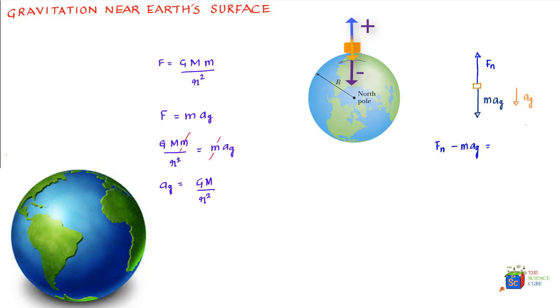If we write Newton's second law for this setup, what you get is Fn minus mag should equal to m into omega square r, and we'll put a negative sign outside because this is acting towards the center of the Earth. Likewise, we've taken mag also negative because it's acting towards the center of the Earth, and Fn has been taken positive because it's acting away from the center of the Earth.